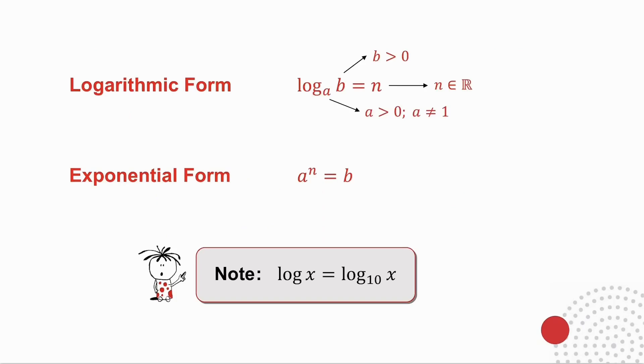If I look in logarithmic form, the number has to be positive. I cannot take the log of a negative number. The base has to be positive and it cannot equal 1. The answer you get can be any real number. So your answer can be positive, negative, 0, fractions, decimals, any real number. There are restrictions on the number that you can take and the base, but the answer can be any real number.